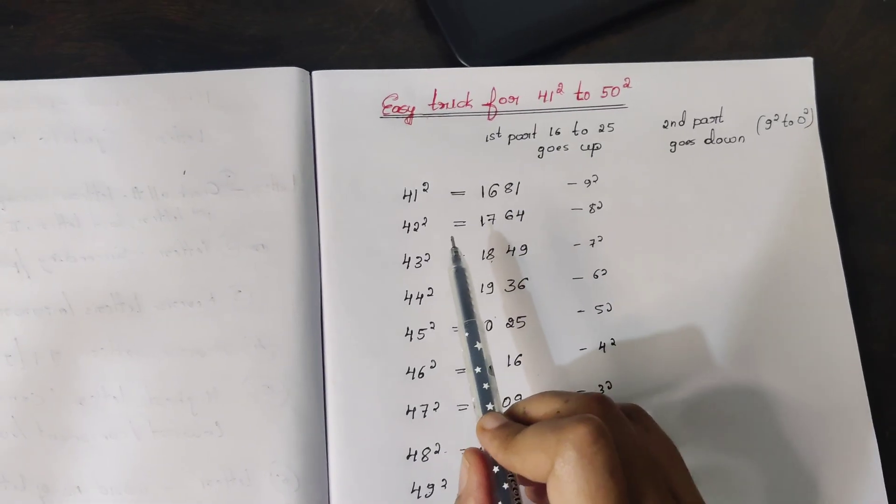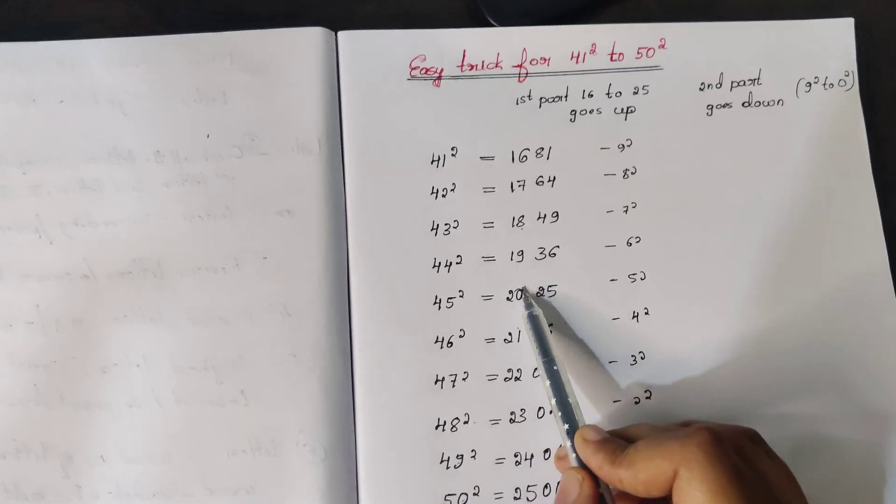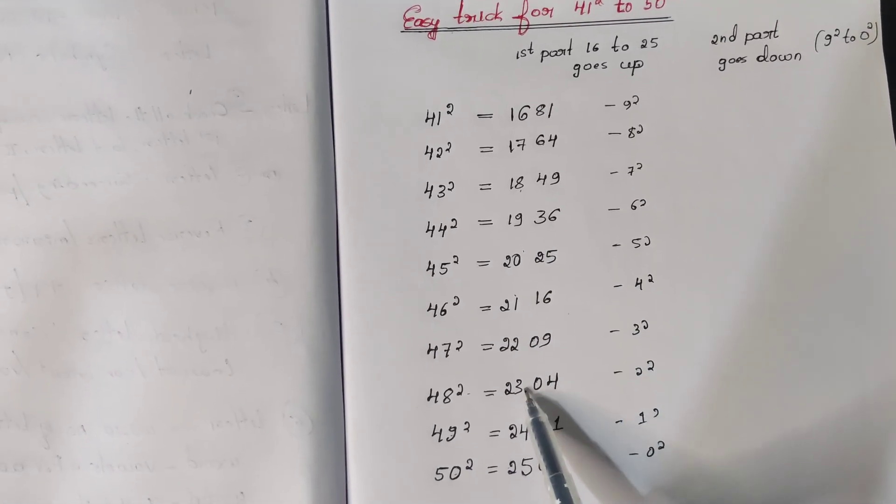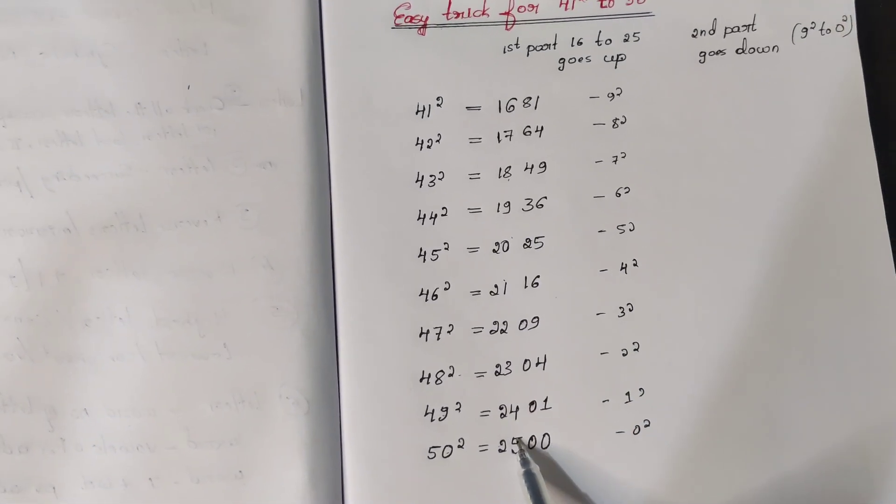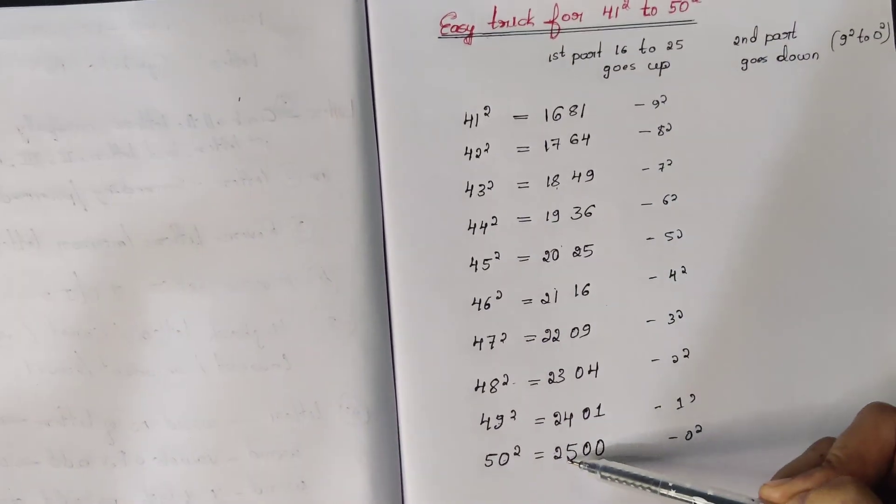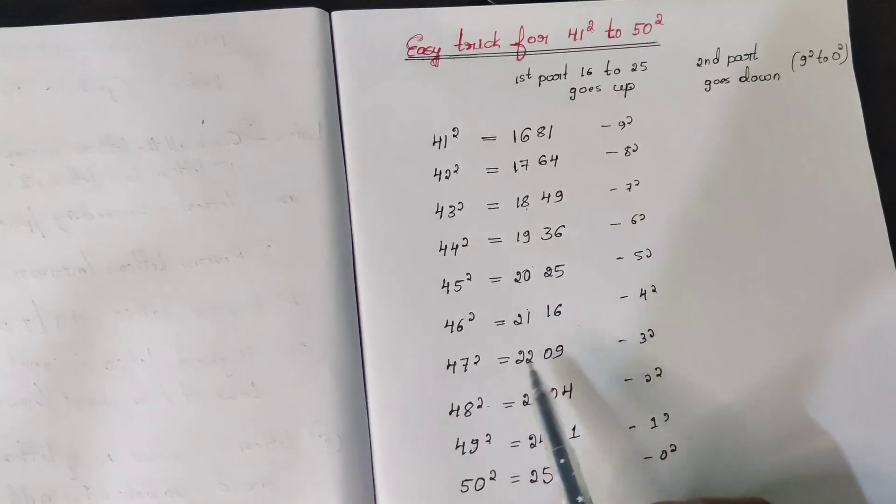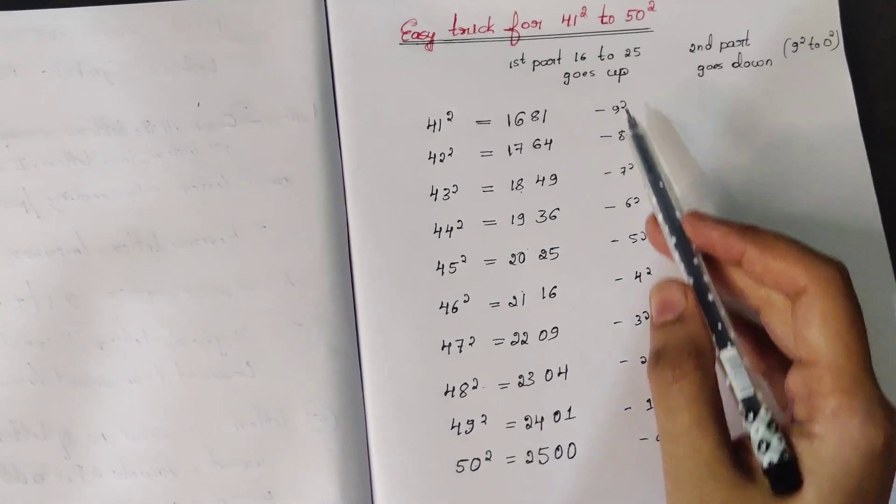the pattern of the two digits. It goes like 16, 17, 18, 19, 20, 21, 22, 23, 24, 25 - simple consecutive numbers from 16 to 25. And the last two digits go in a reverse order like this: